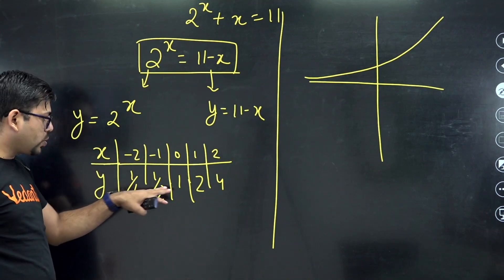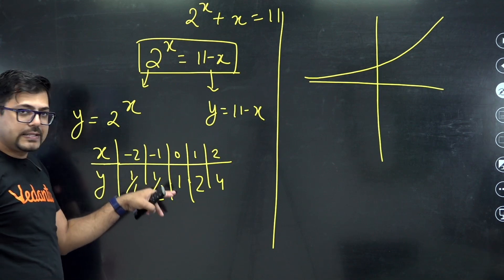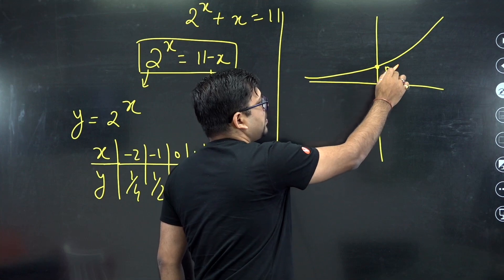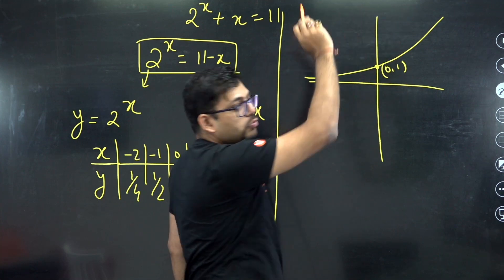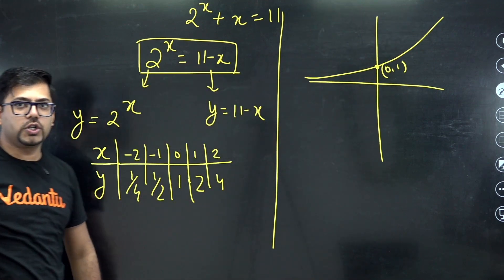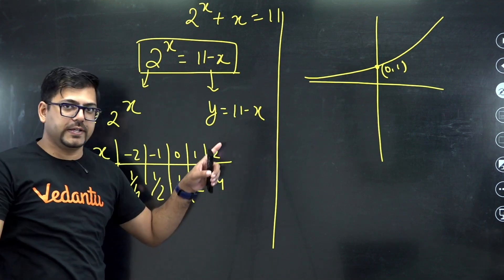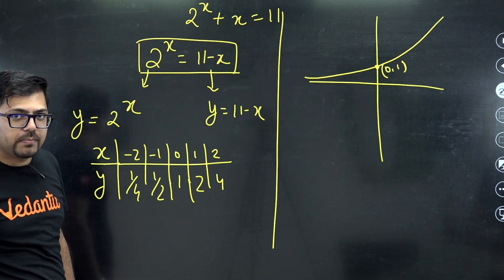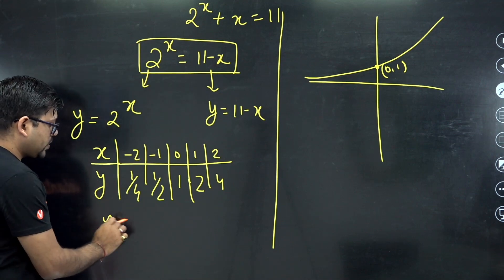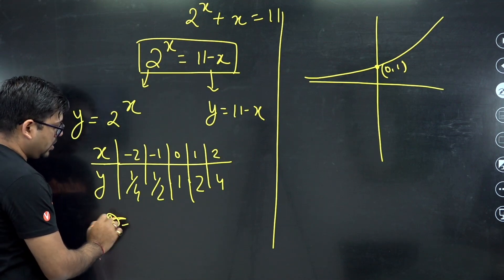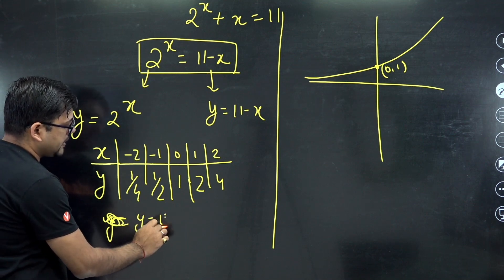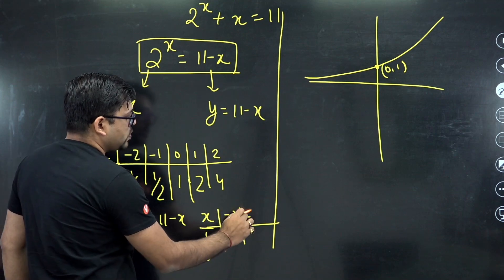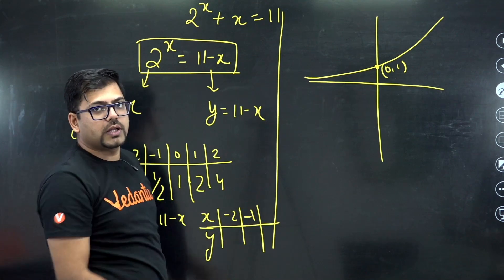For all negative values it is going to be less than 1. At 0 it will hit the 1 mark, and then moving on as you move on 1, 2, it will exponentially rise. Similarly, you can make the graph for y equals 11 minus x. You can again put x and y, you can put multiple values like minus 2, minus 1, 0, 1, 2 and then plot the graph.